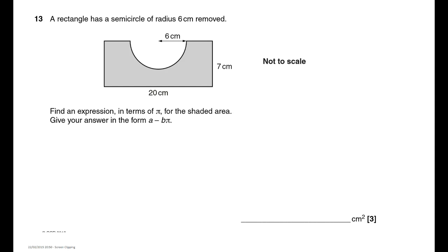Okay, we've got to work out the expression for the shaded area. So what I'll do is I'm going to work out the area of the whole rectangle and then take away the area of this shape here which is a semicircle.